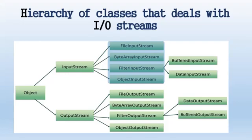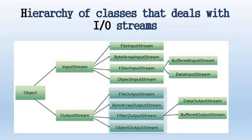FileInputStream, ByteArrayInputStream, FilterInputStream, and ObjectInputStream are direct descendants of InputStream, while FileOutputStream, ByteArrayOutputStream, and ObjectOutputStream are descendants of OutputStream.